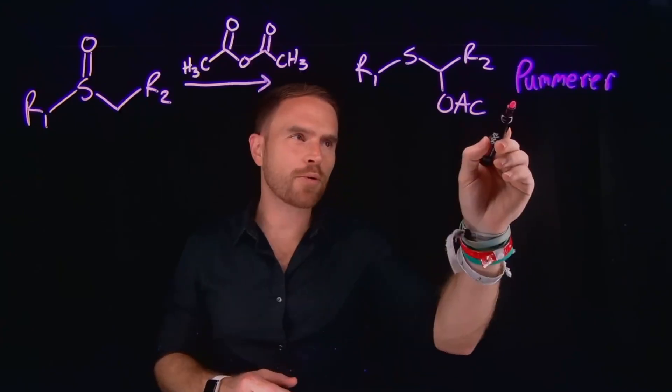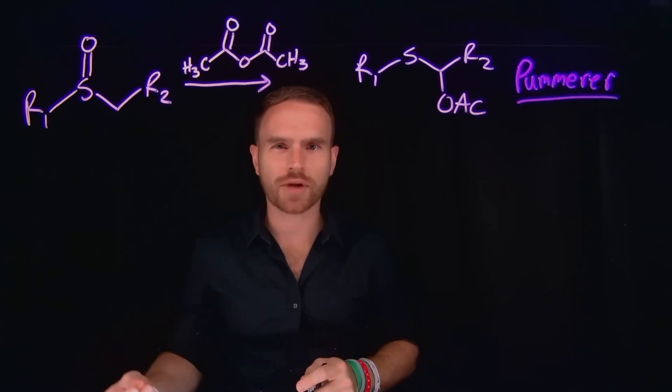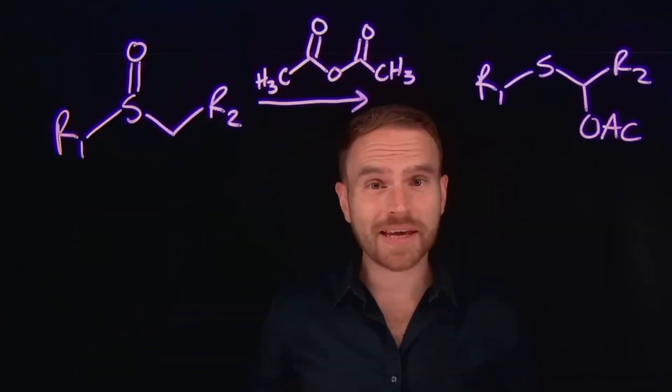And importantly, these Pummerer rearrangements always undergo this reaction using acetic anhydride, which I also can write as Ac2O. And to begin this reaction, it's important to remember that this is just one of the resonance forms that we can draw for this molecule.